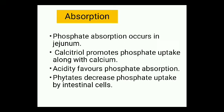Phosphorus absorption occurs in the duodenum — the same site as calcium absorption. Calcitriol, which is the active form of vitamin D, and acidity (low pH) favor and promote phosphate absorption. Phytates, on the other hand, inhibit and decrease the absorption of phosphate.